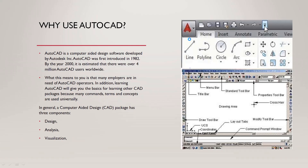AutoCAD is used for design, analysis, and visualization. The basic components of the AutoCAD interface include: the title bar, menu bar, standard toolbar, property toolbar, crosshair, drawing area, draw toolbar, UCS icon, coordinates, command prompt window, and the modify toolbar.